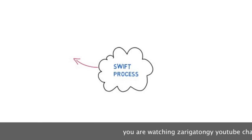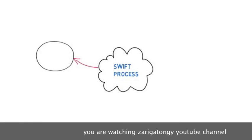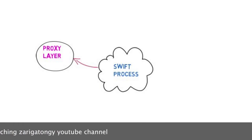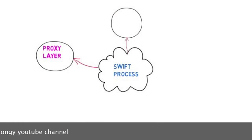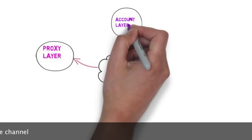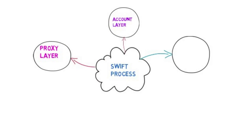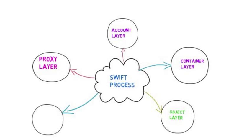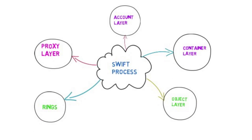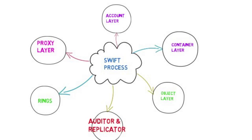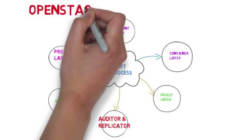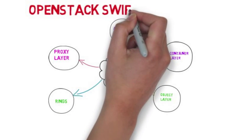To manage the data, the main processes of Swift are the proxy layer, the account layer, the container layer, the object layer, the ring service, the auditor and replicator. These are OpenStack Swift component server processes.